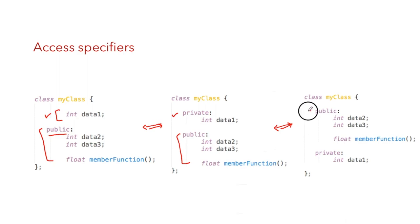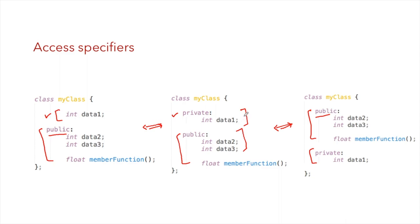In a third example, public members are declared first and private members after. The order does not matter in C++ — what matters is the access specifier. However, it's generally good practice to declare private members first, as they get more importance when reading the code, and public or protected members are usually written after.